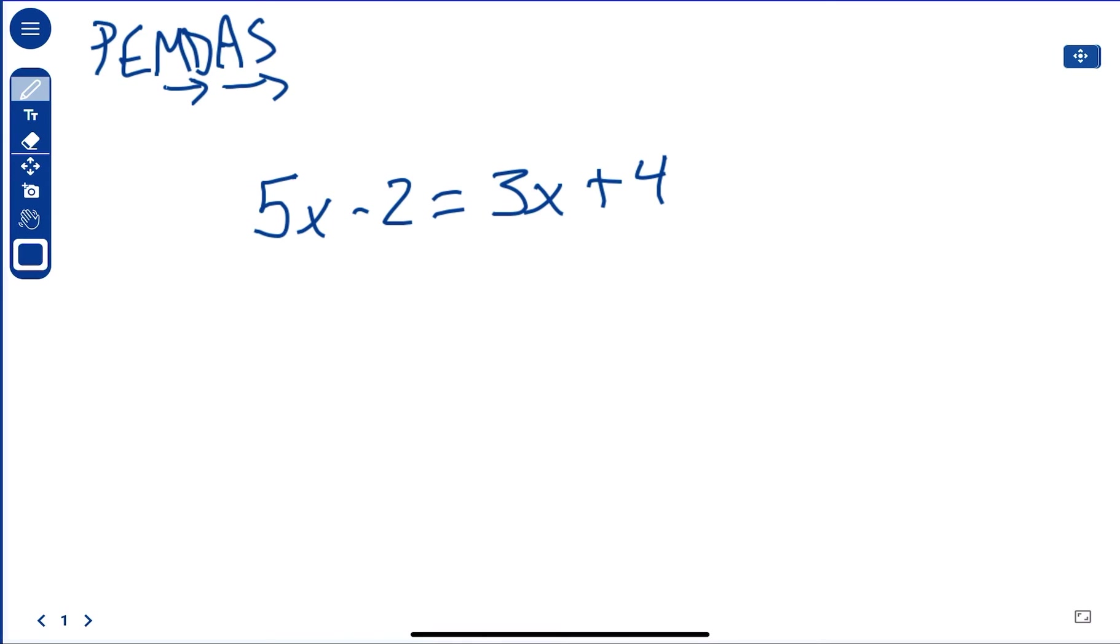So, what you're going to have to do here is get your common terms together and then solve for X. So we have our X here and our X here, and then we just have regular numbers here.